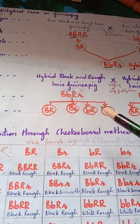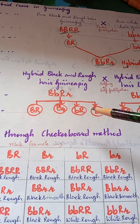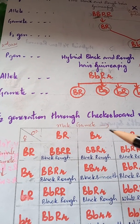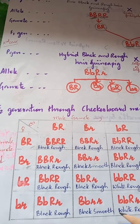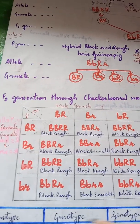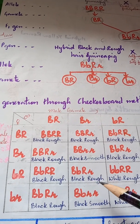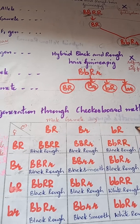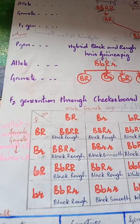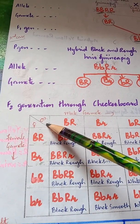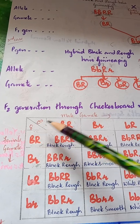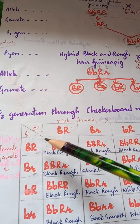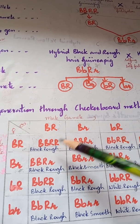The gametes produced by one parent will be similar to those produced by the other parent. The offsprings in the F2 generation will be produced by crossing these gametes using the checkerboard method. In this checkerboard, we write male gametes horizontally and female gametes vertically. Since male and female gametes are the same, we fill in the four types of gametes in each direction, and then the male and female gametes unite.